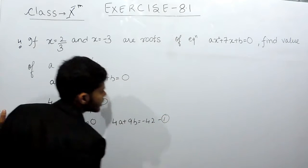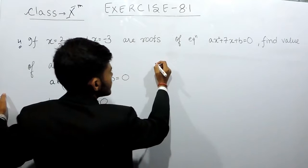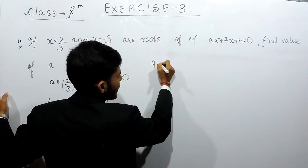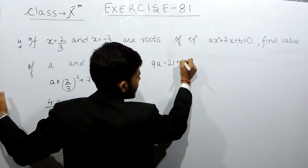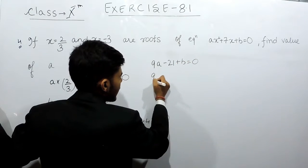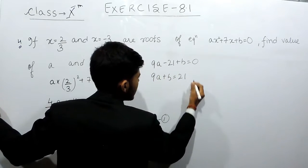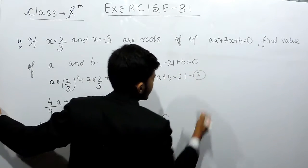Now, keeping x equals to minus 3, that will be equals to 9a minus 21 plus b equals to 0. So, 9a plus b will be equals to 21 and this is the second equation.